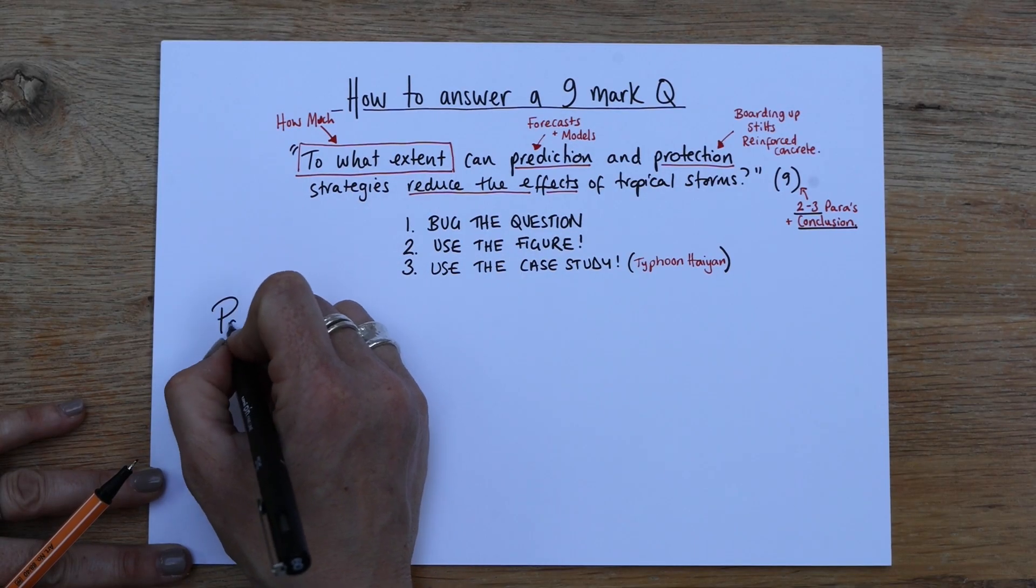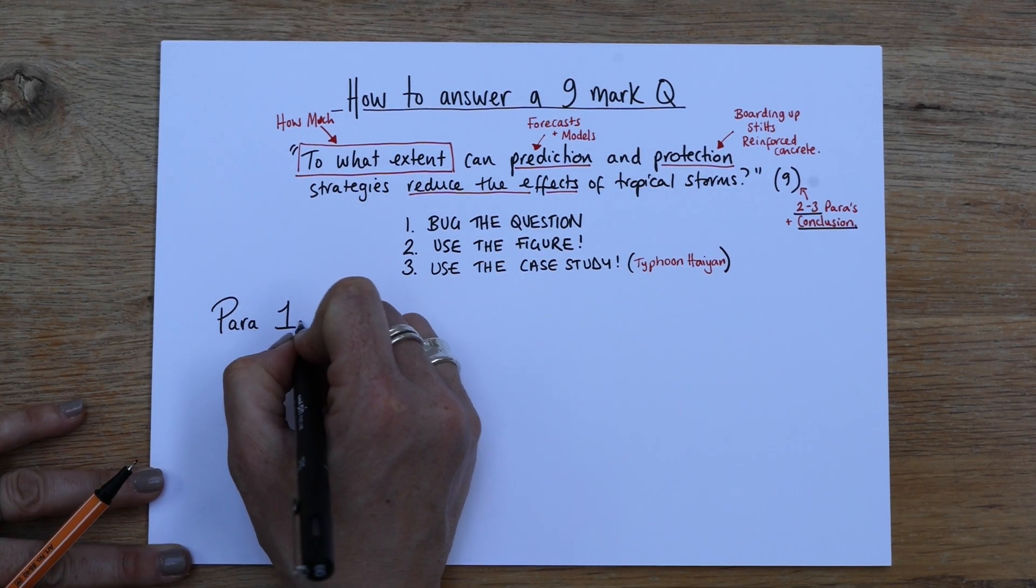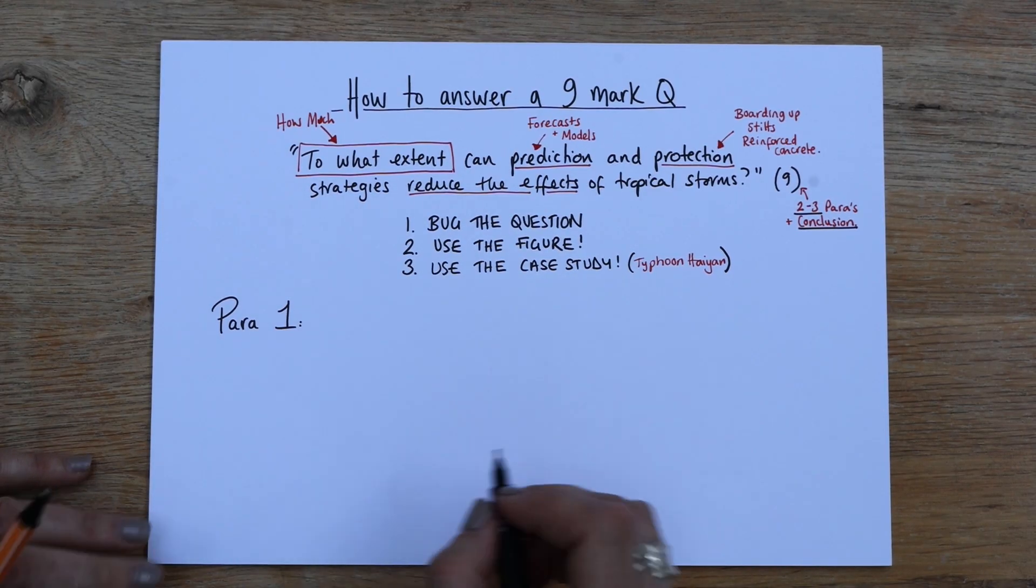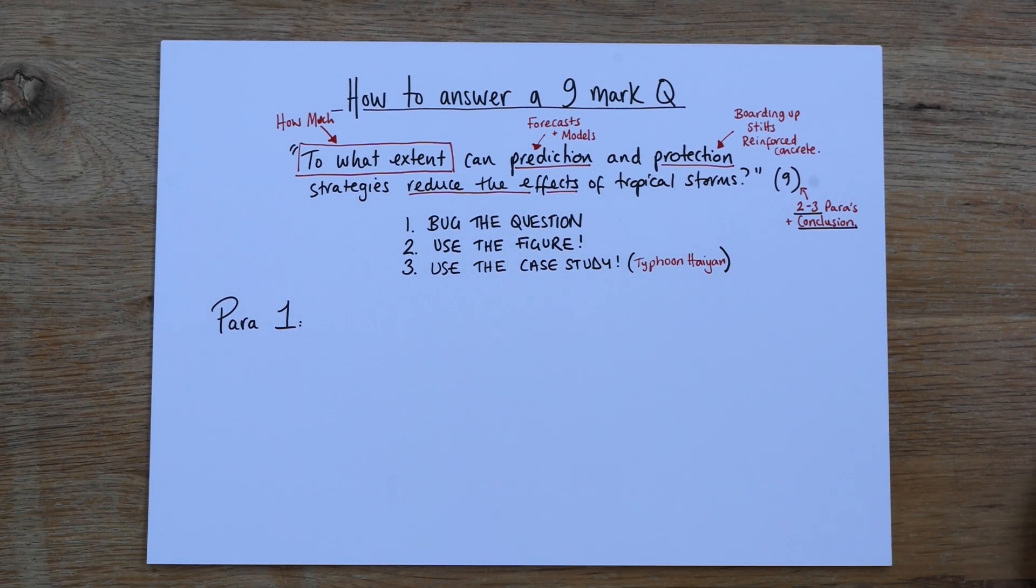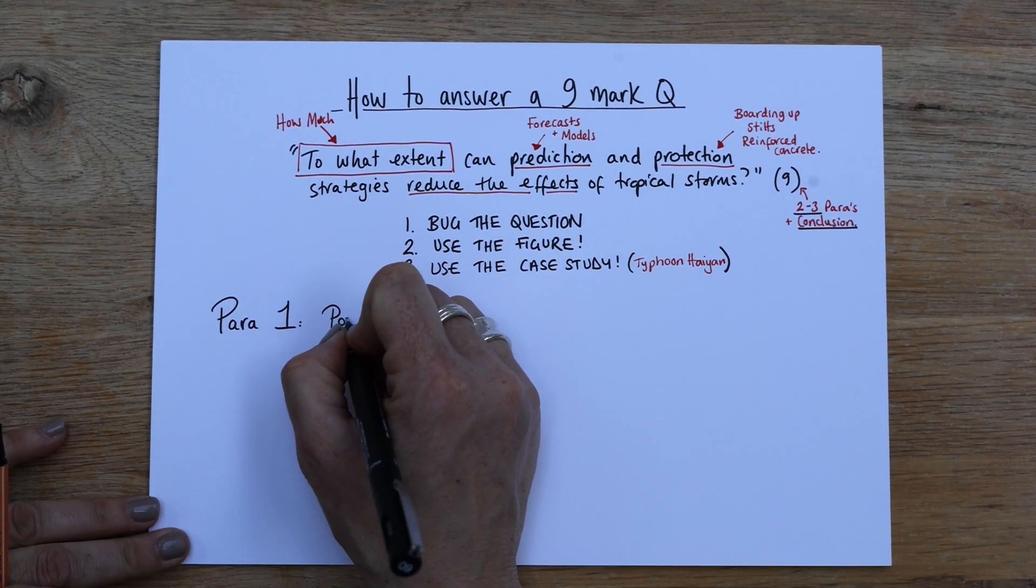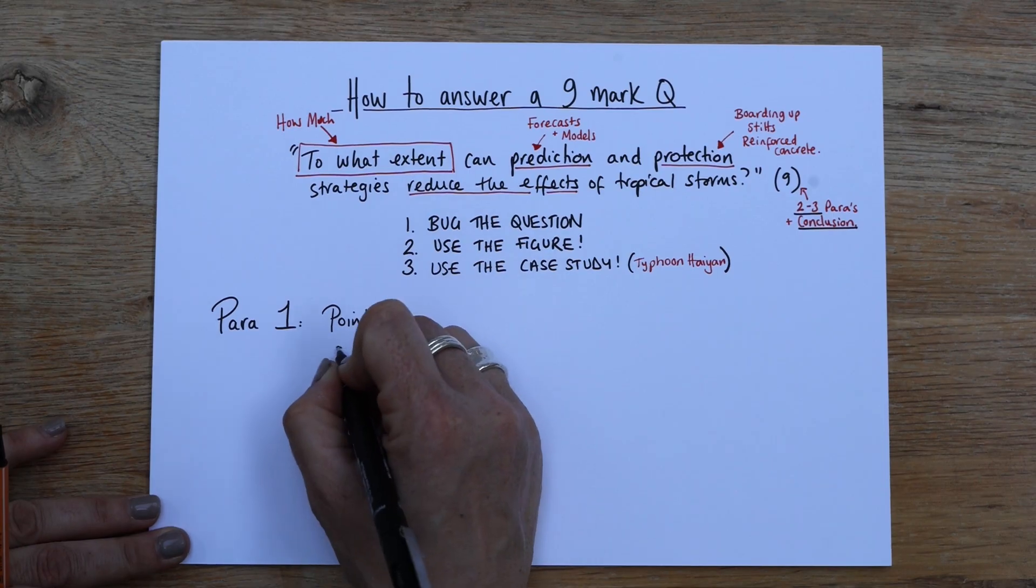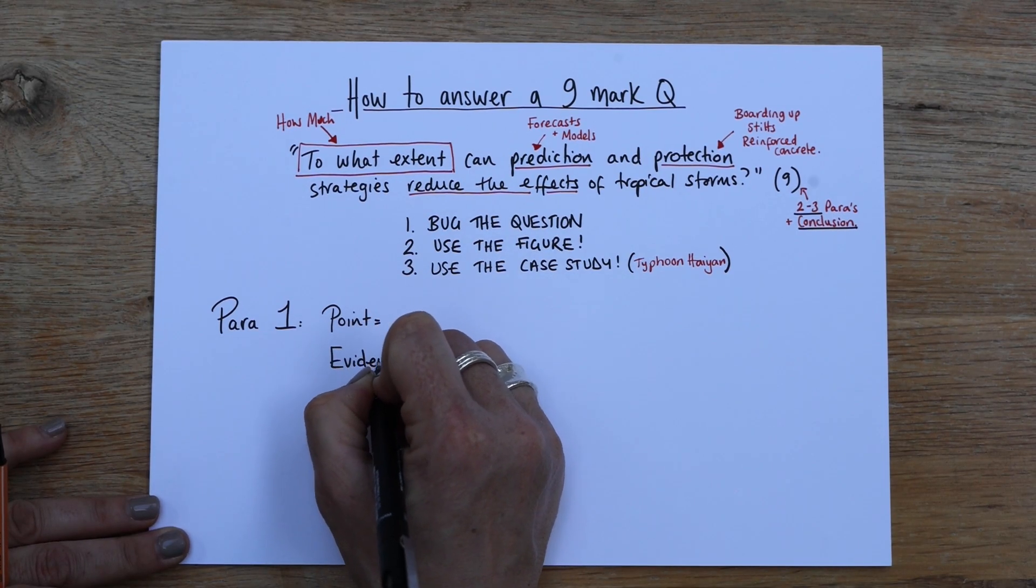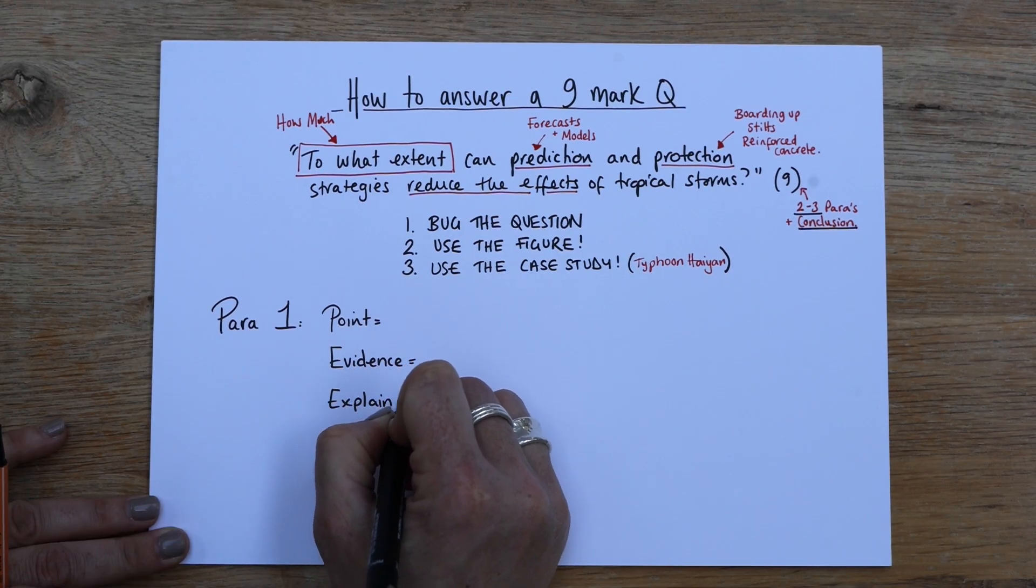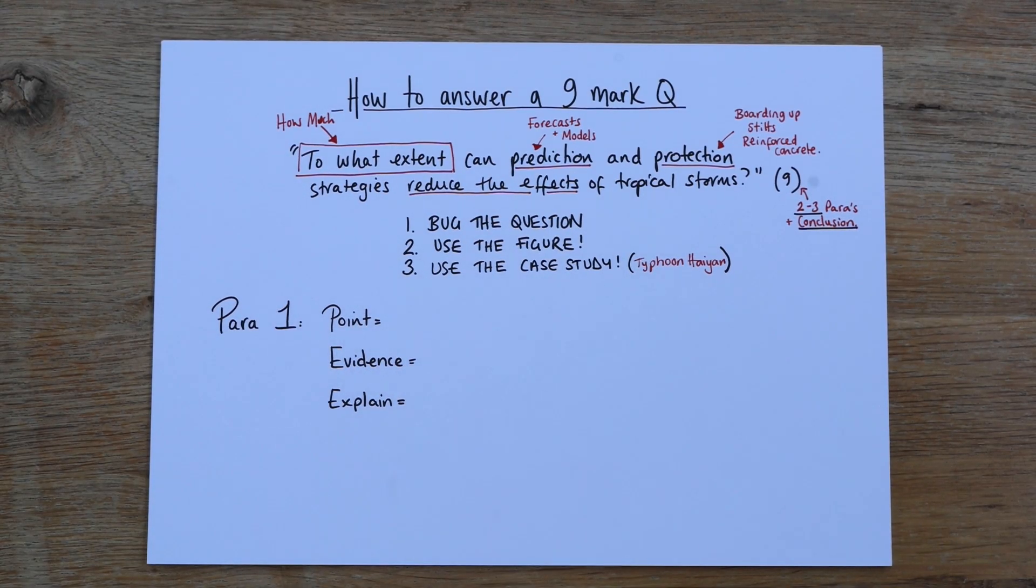So we want two to three paragraphs and a conclusion. So I would say para one, I'll tell you what, I'll do para one with you and then para two and the conclusion you'll be able to work pretty easily without. Now we do point evidence explain. So I'm just going to write that in point evidence explain. That's the sort of format you want to use when you're writing answers in geography.